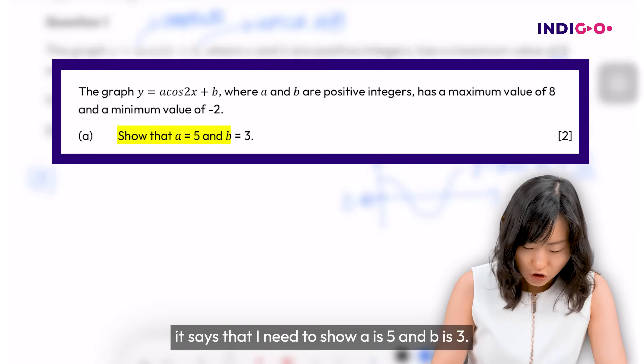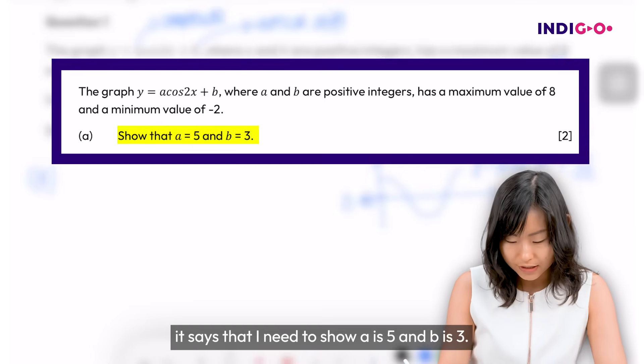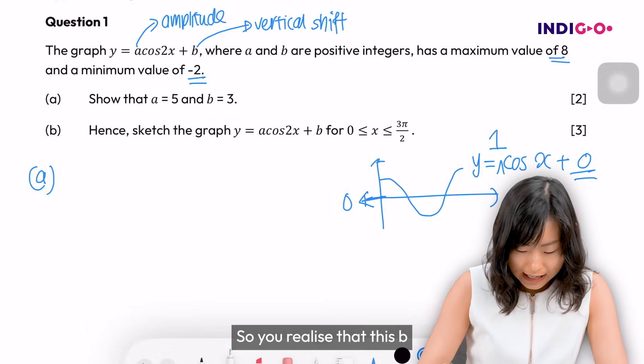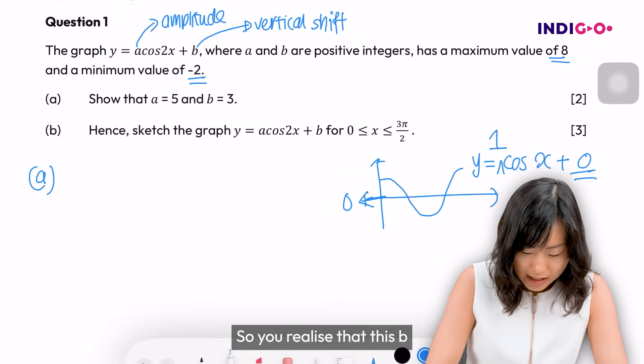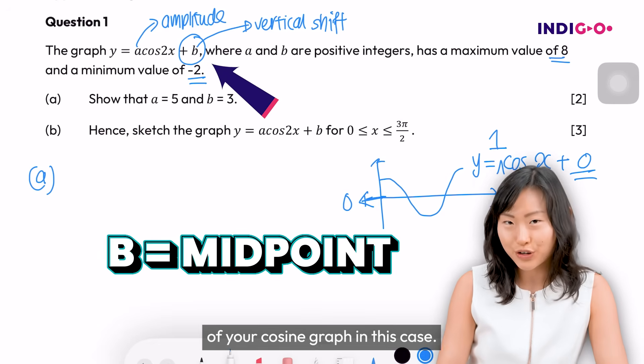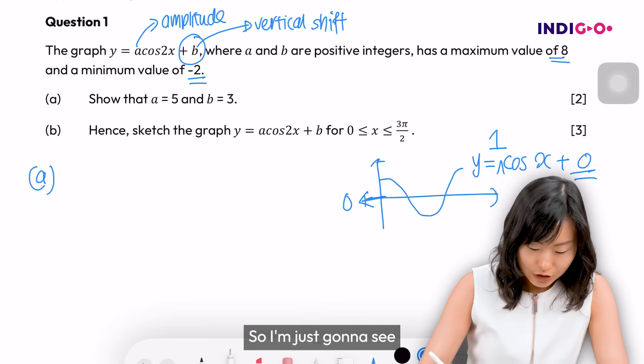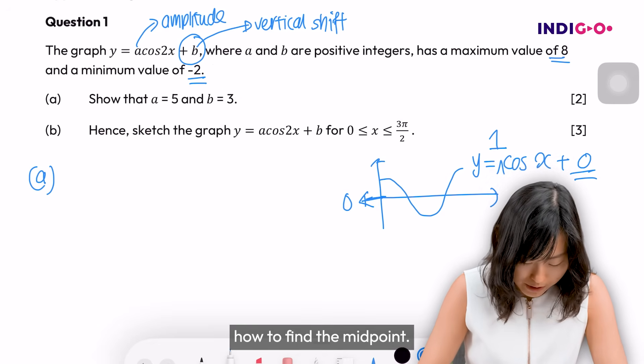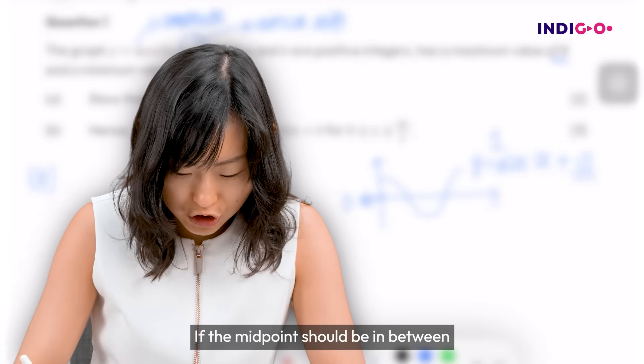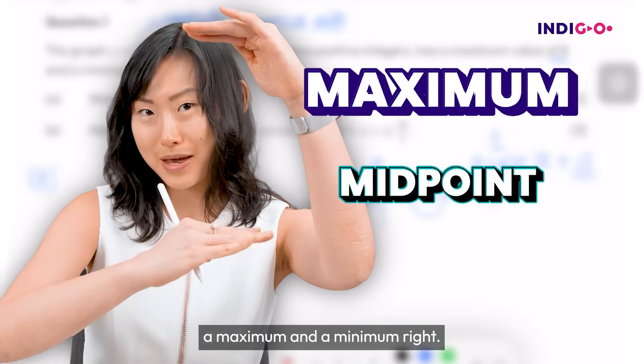And then going back to this part a, it says that I need to show a is 5 and b is 3. So you realize that this b is actually the midpoint of your cosine graph in this case. So I'm just going to see how to find the midpoint. The midpoint should be in between the maximum and the minimum, right?